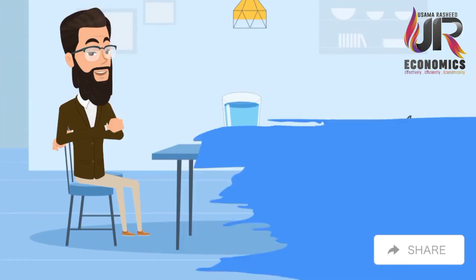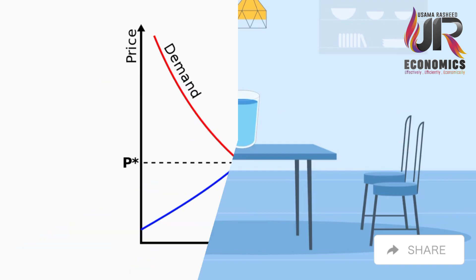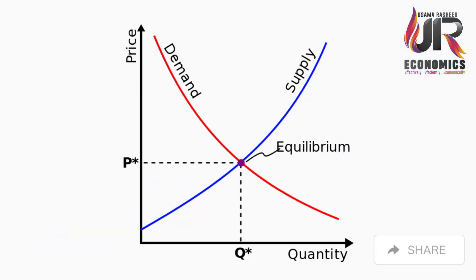Imagine a glass of water on a table: no movement, no change — that's equilibrium. This is the economics equilibrium diagram. It shows where supply meets demand, balancing quantities and leading to stable prices and market harmony.